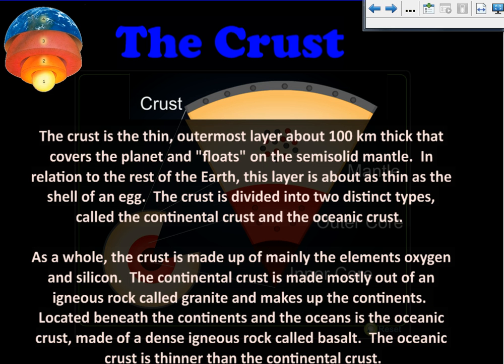We're going to start by talking about the crust. The crust is the thin outermost layer, about 100 kilometers thick, that covers the planet and floats on the semi-solid mantle. In relation to the rest of the Earth, this layer is about as thin as the shell of an egg. The crust is divided into two types, the continental crust and the oceanic crust.